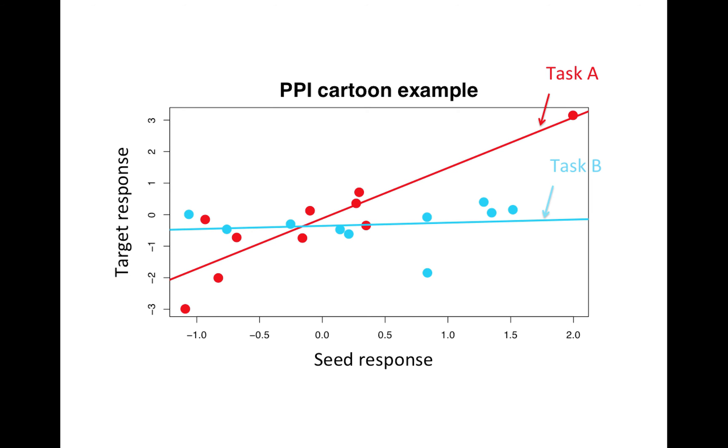So here's a cartoon example. The reason why this is a cartoon is your task activation typically isn't discrete. You don't have just 10 observations of task activation, but let's pretend you do. In that case, you would imagine you want to run a model like this where you have the seed's response on the x-axis, the target's response on the y-axis, and you have two tasks. Task A is in red and task B is in blue, and you fit a line through the blue dots and the red dots, and the hypothesis of interest is if the slope of the red line differs from the slope of the blue line. And that is what the interaction effect tests.